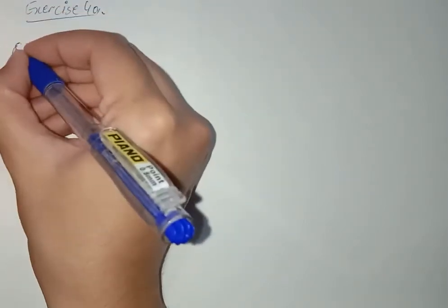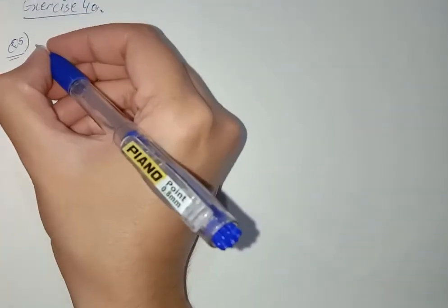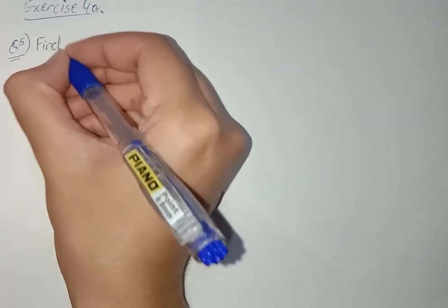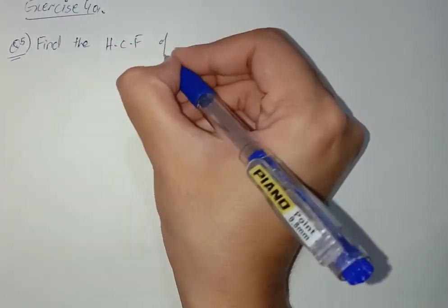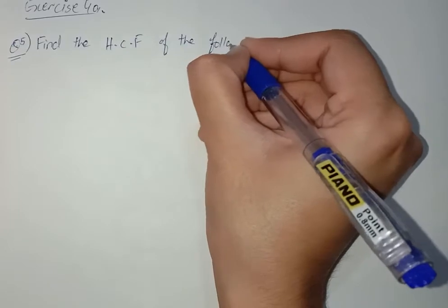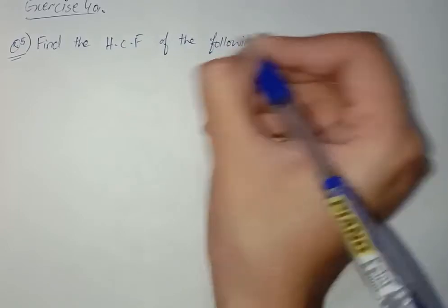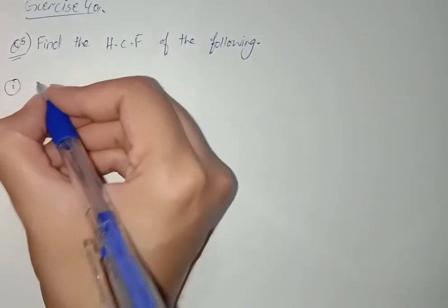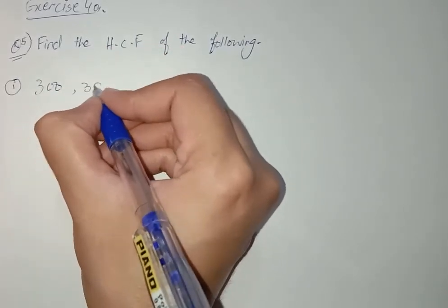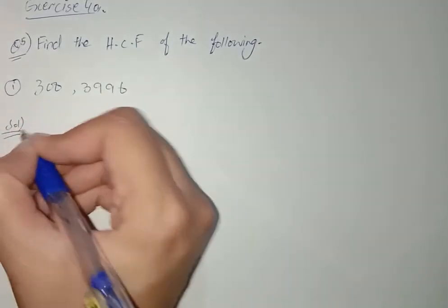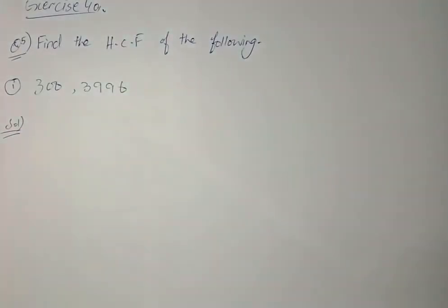Exercise 4A, question number 5: find the HCF of the following. Now move towards part number one, which is 300 and 3996. We have to find its HCF with the help of the division method.